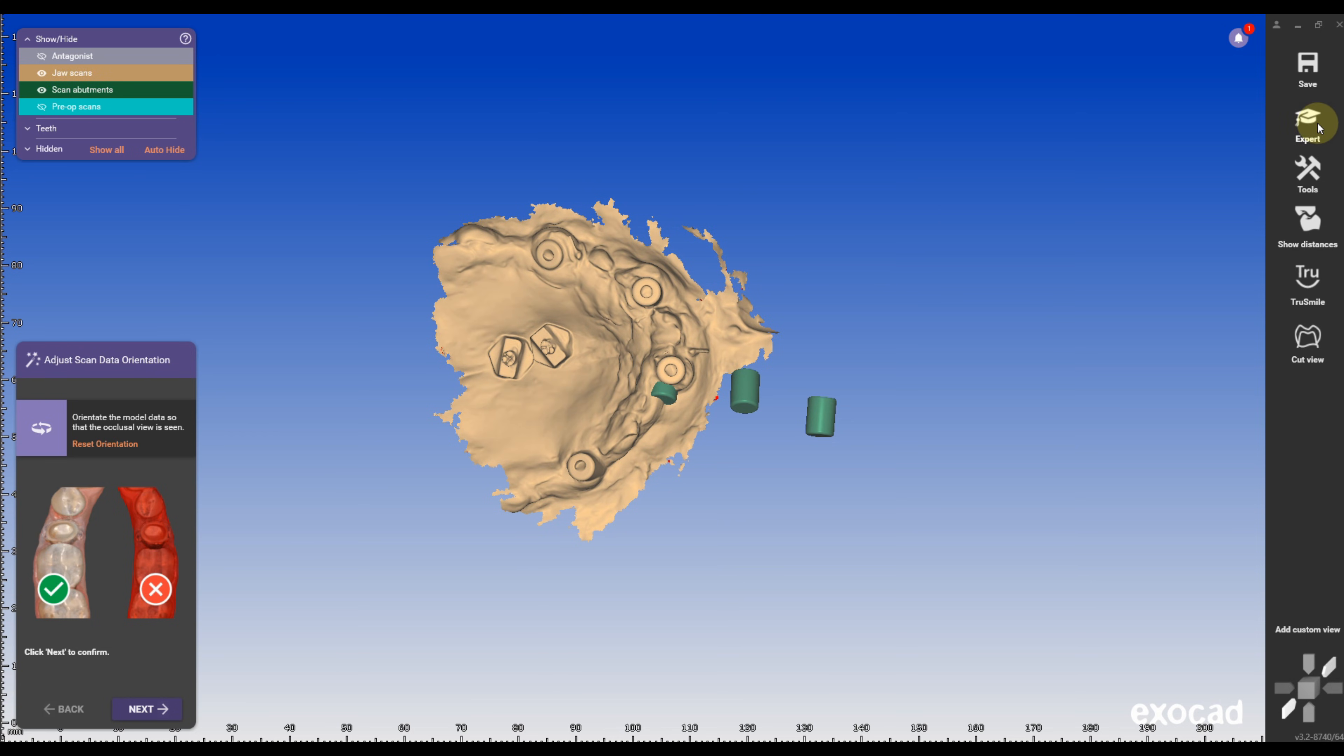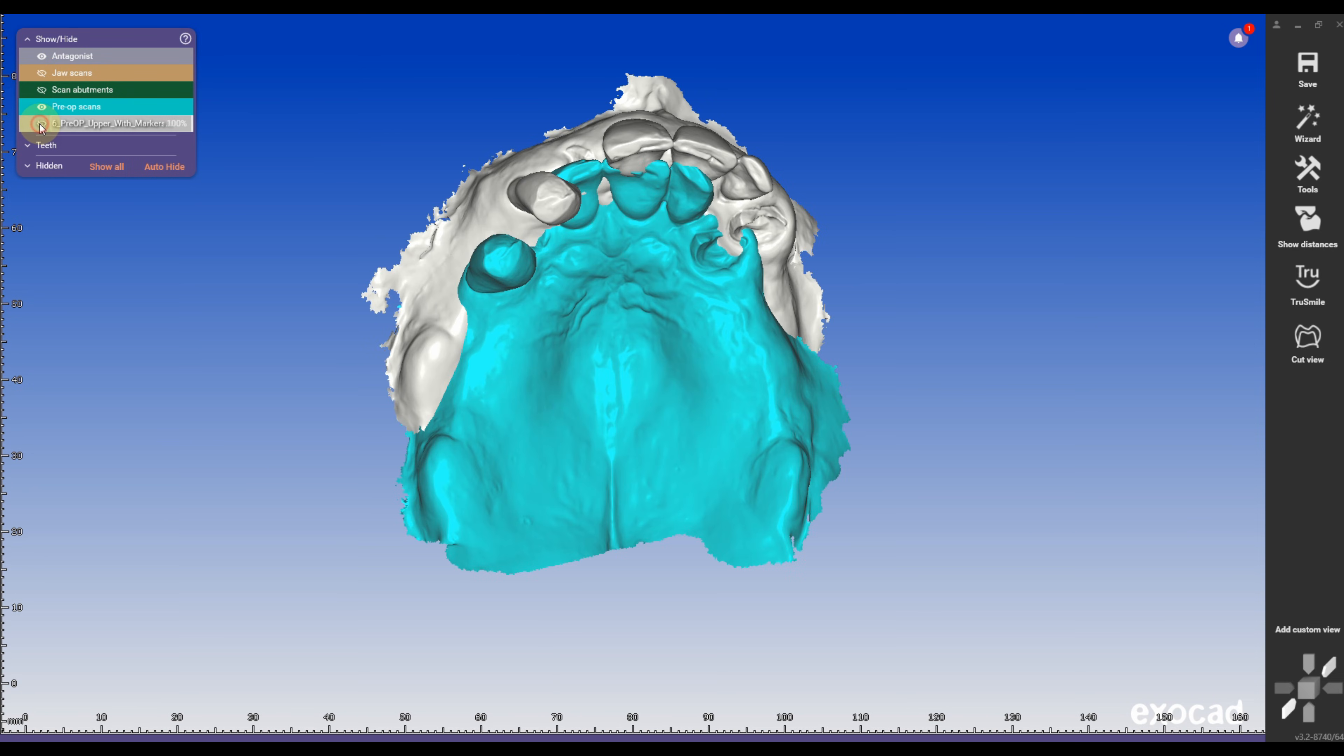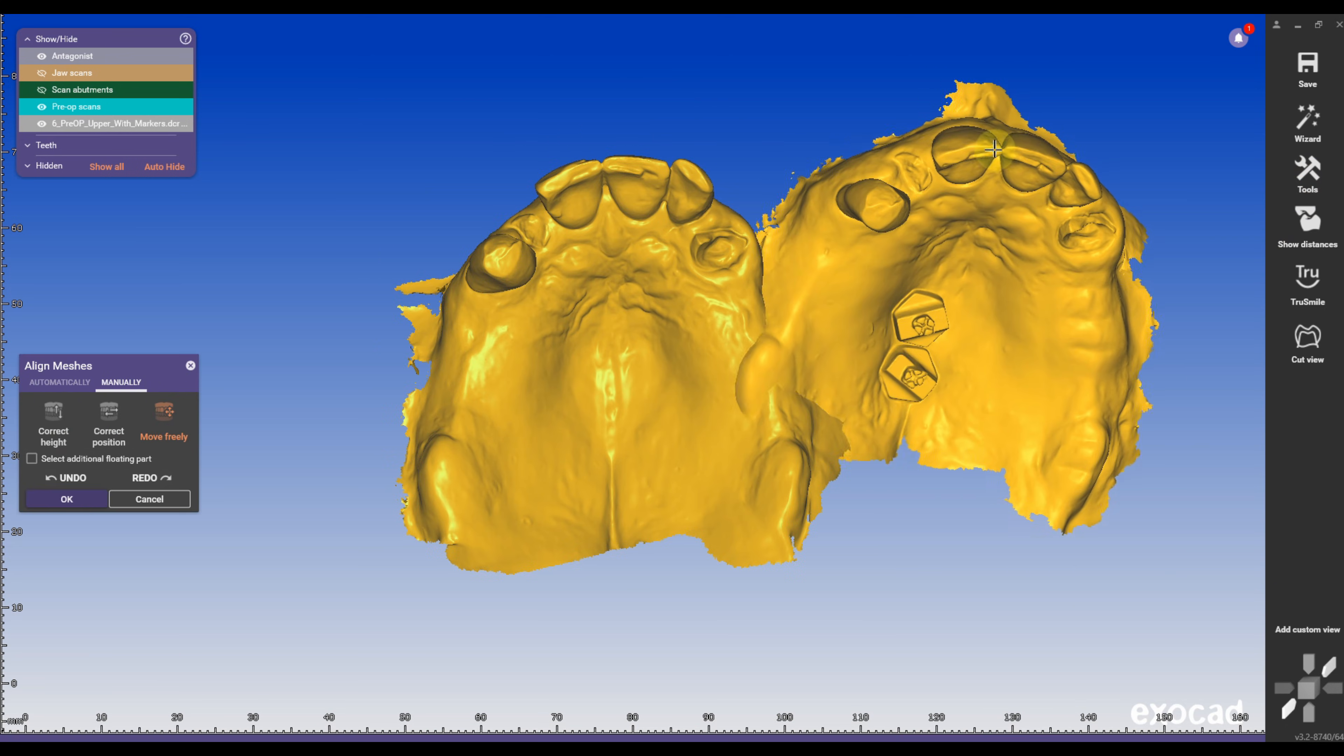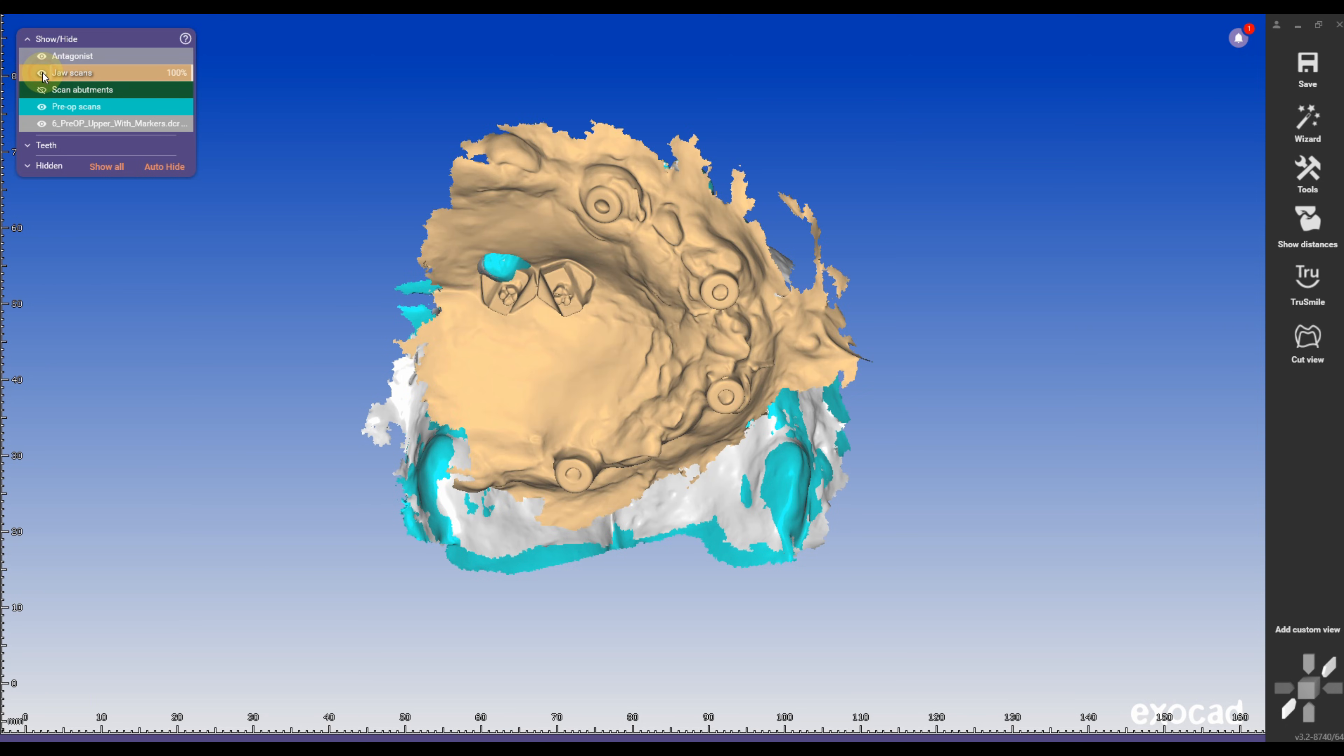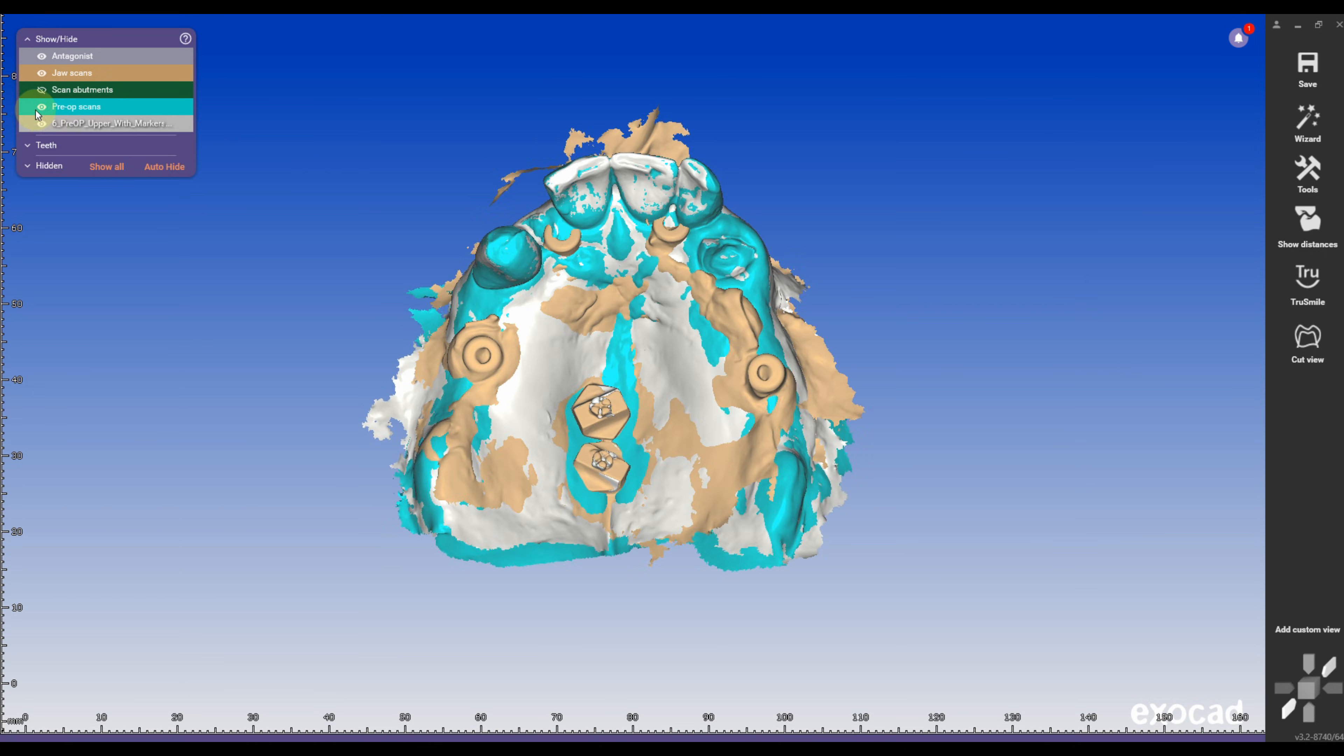The first step is to align all the scans to the one with the occlusal relation to the antagonist. Usually, this is the initial pre-op scan. We start by aligning the pre-op scan, the one with the scan markers in the palate, to the initial pre-op scan, which should be straightforward as it is initially the same situation. Next, we align the post-surgery scan, the one with the markers in the palate, to the pre-op scan. For the lower arch, this can be tricky, so I recommend placing three markers, two in the posterior region and one in the anterior region. I use the scan markers as my primary alignment points.